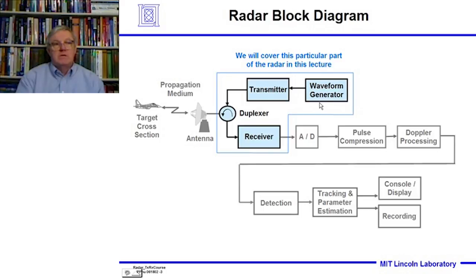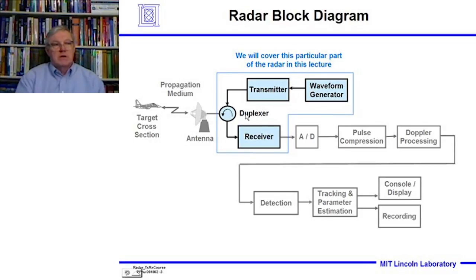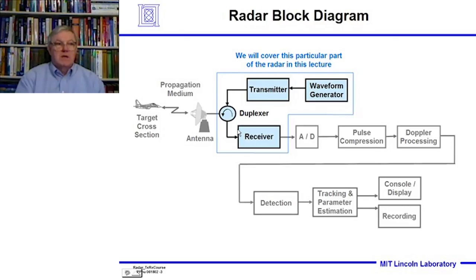The waveform generator is where we generate the signal for the first time. It's amplified in the transmitter and then goes out through a device called a duplexer. Whenever you see duplexer, think switch — because we don't want that very large transmitter signal to go into the receiver while we're transmitting.